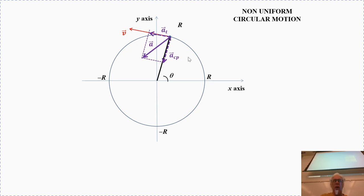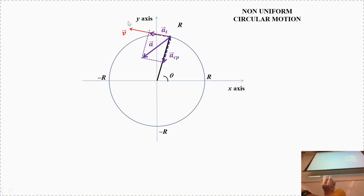It all depends on the type of acceleration you have. If the tangential acceleration is constant, this one might not change. But the centripetal acceleration will change no matter what if you have a tangential component, because the velocity is changing and the centripetal acceleration depends on the velocity. We could also have the tangential acceleration decreasing the speed of the particle.